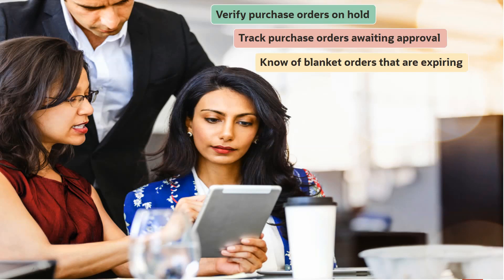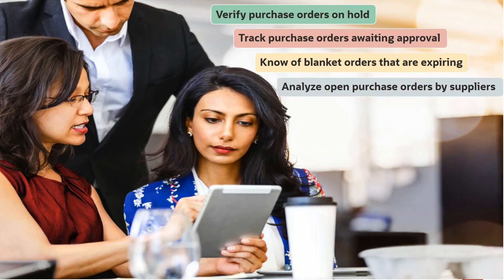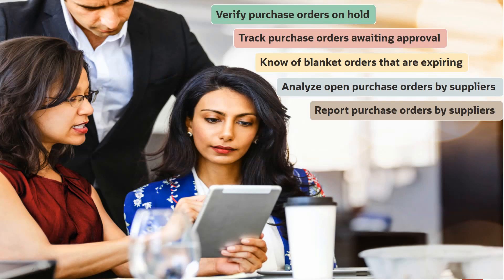Third, the procurement team wants to review blanket orders that are expiring in the next few months so as to follow up with respective suppliers and know when those orders will be delivered. Fourth, they want to analyze open purchase orders by suppliers. Fifth, they want to generate a report with a summary of purchase orders by supplier for their management to review the spend by supplier.